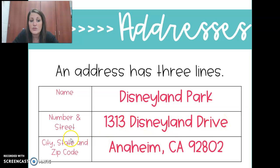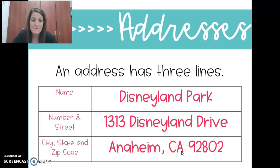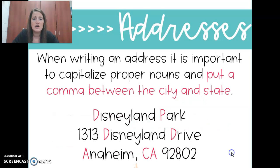The last part, you have to put the city — comma — then the state, which you can use the abbreviation. So CA stands for California. And then the zip code, which is going to be some numbers. It has to be in that format.